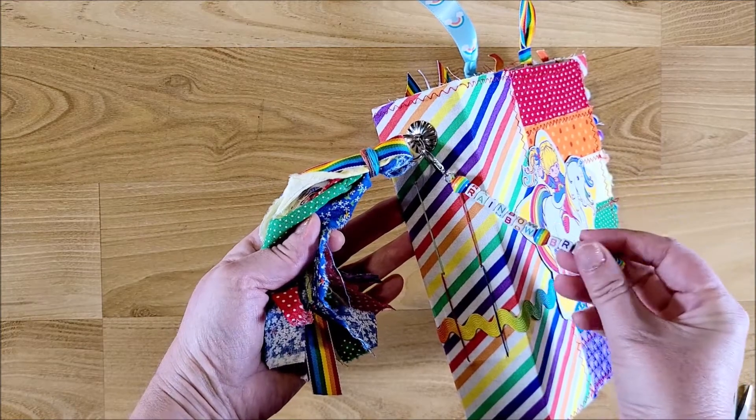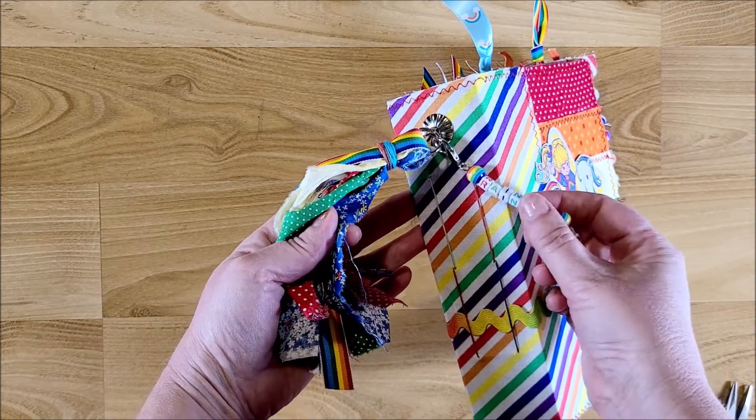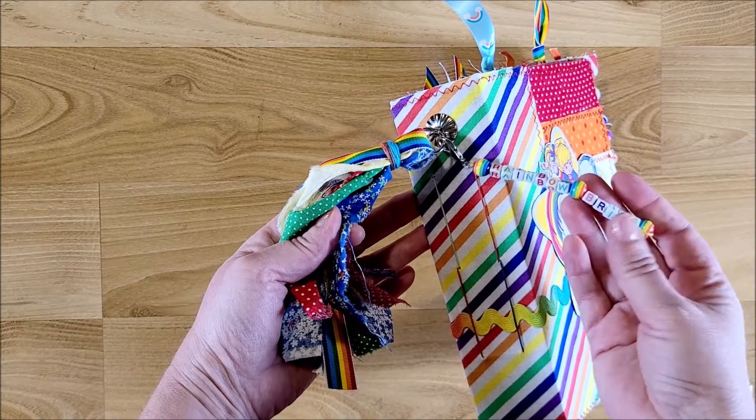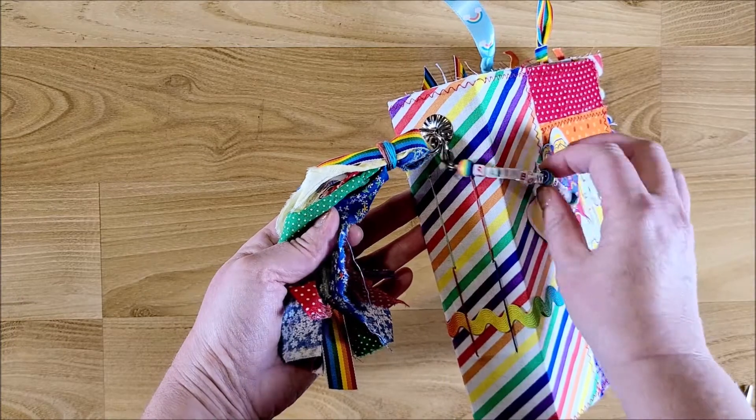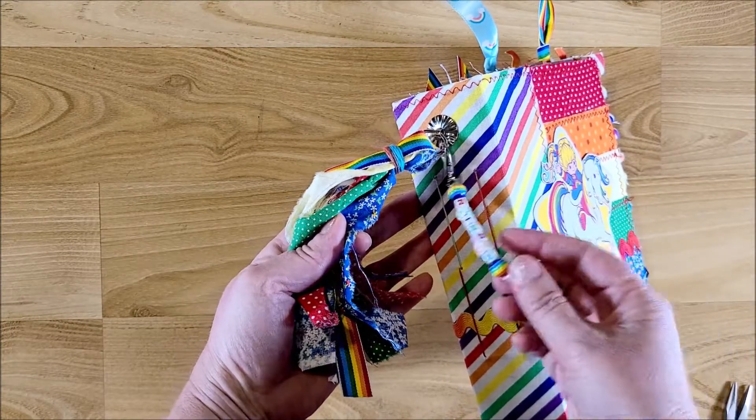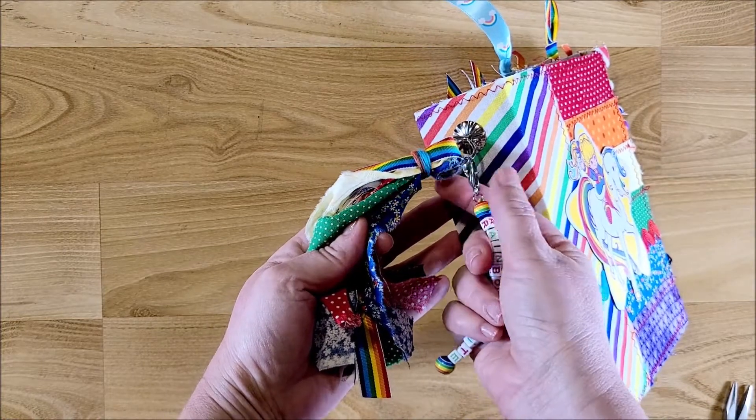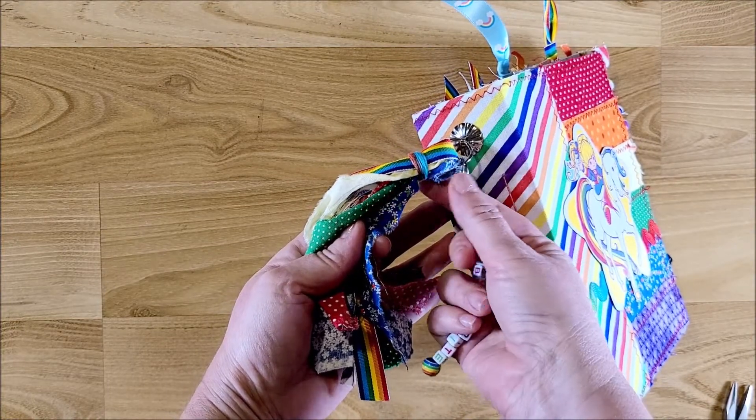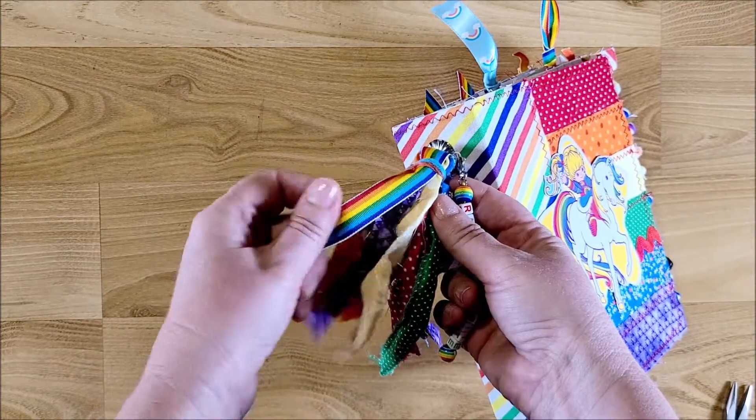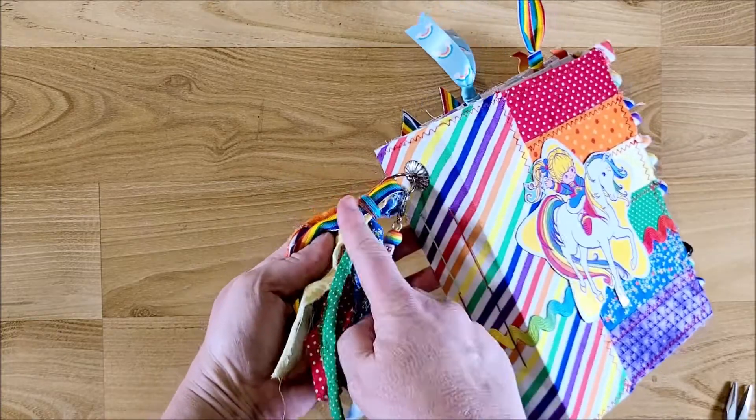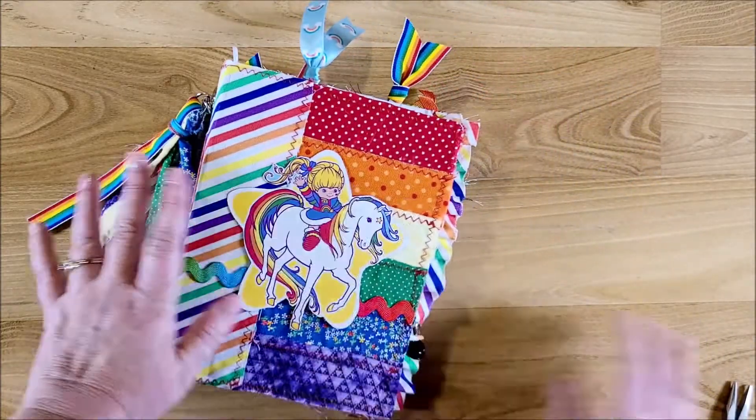I used the letter beads that you can buy at the Dollar Tree and then these rainbow beads I picked up at Joann's and then I used one of the lobster clasps that you can buy at Joann's or Michaels and then all the fun ribbons and fabrics that I used in the journal is what I used on the tassel. So let's go ahead and get started on this.